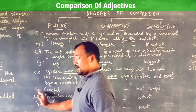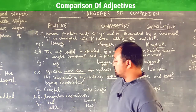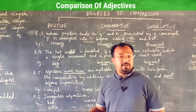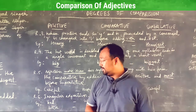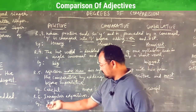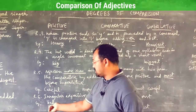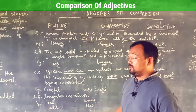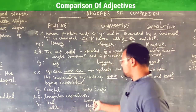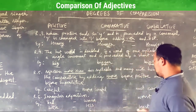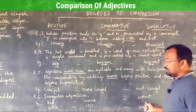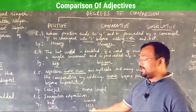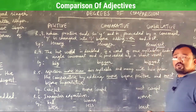Rule number six covers irregular adjectives. There are no rules for these — you just have to memorize them. For example, 'bad' becomes 'worse' in the comparative degree and 'worst' in the superlative degree. 'Little' becomes 'less' in the comparative degree and 'least' in the superlative degree.